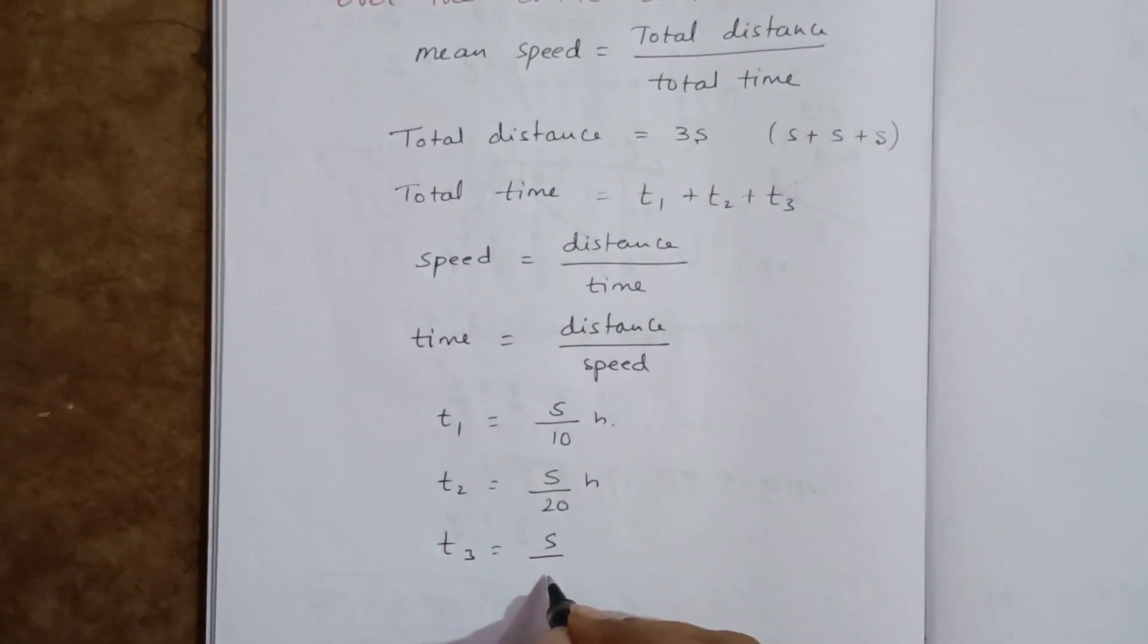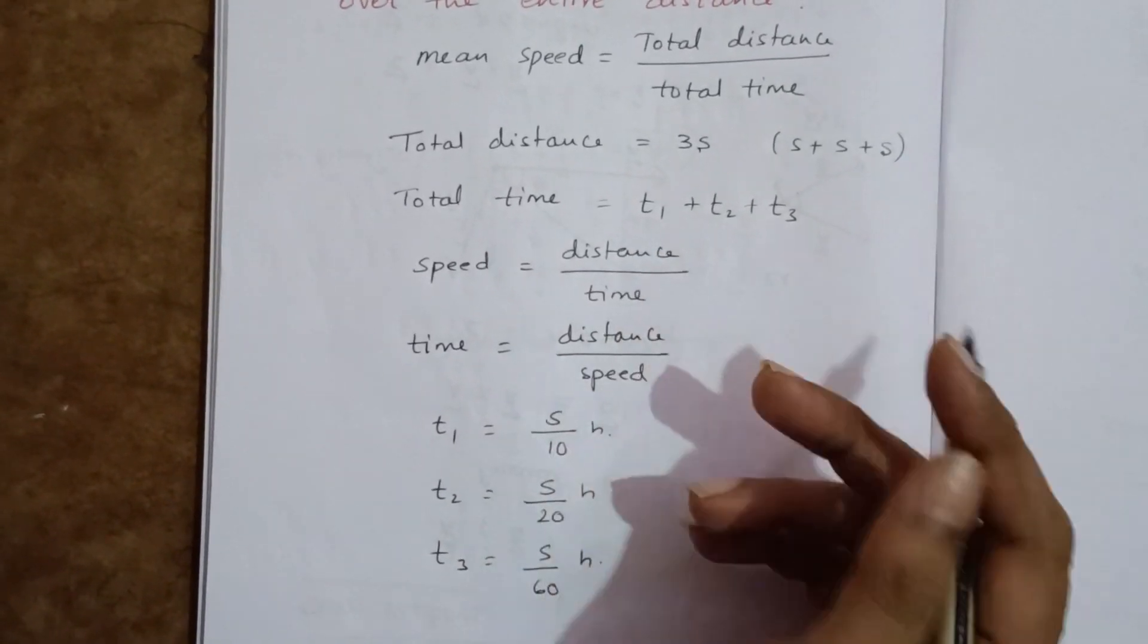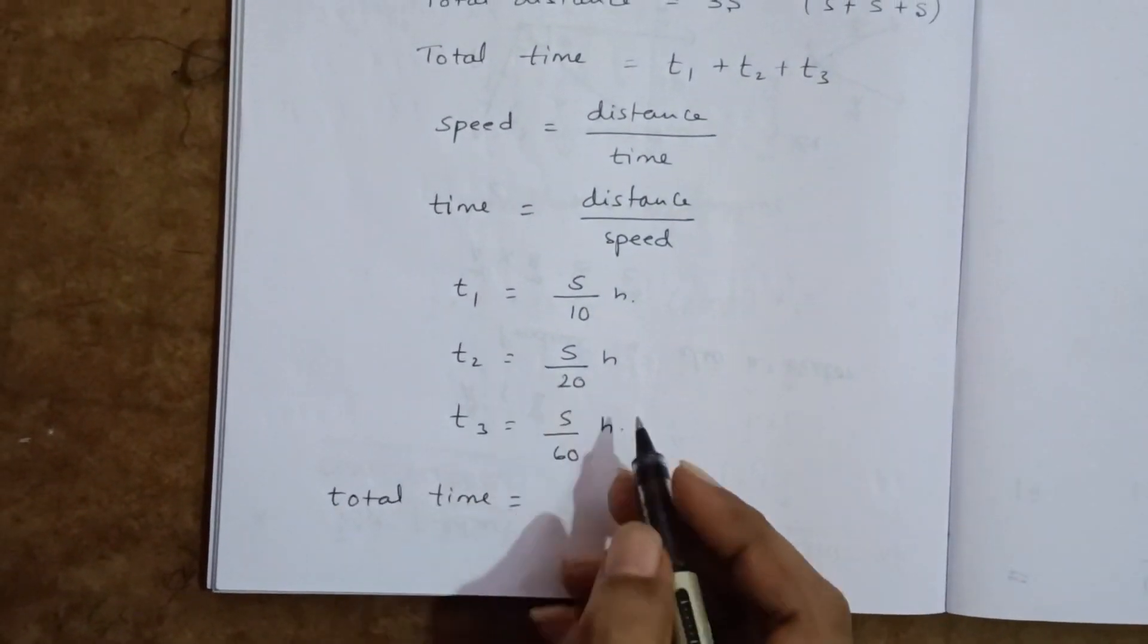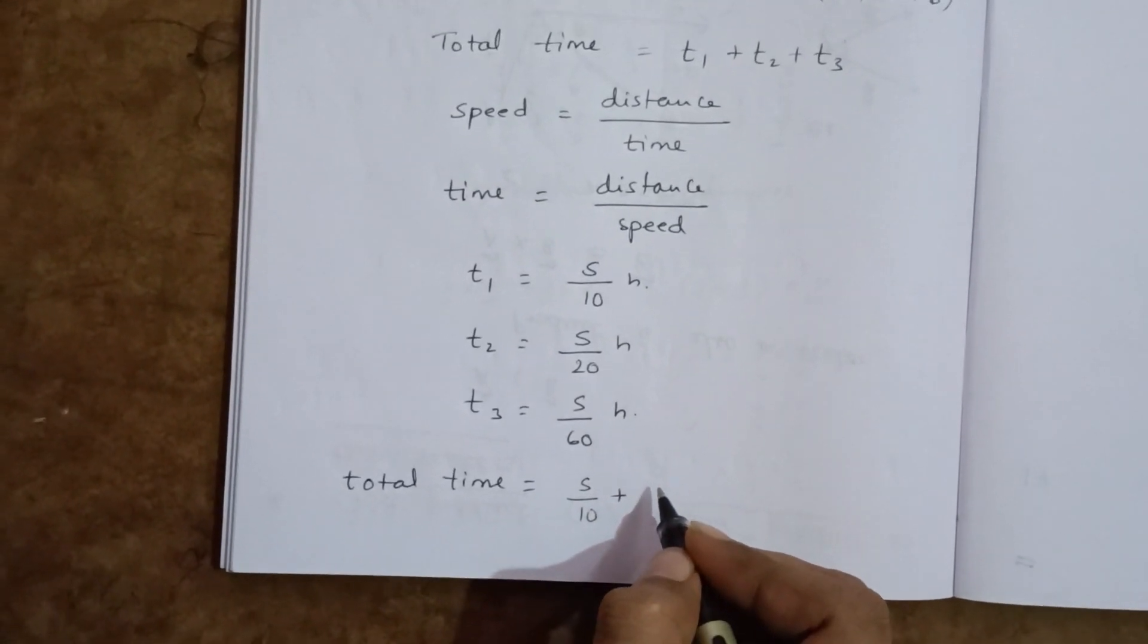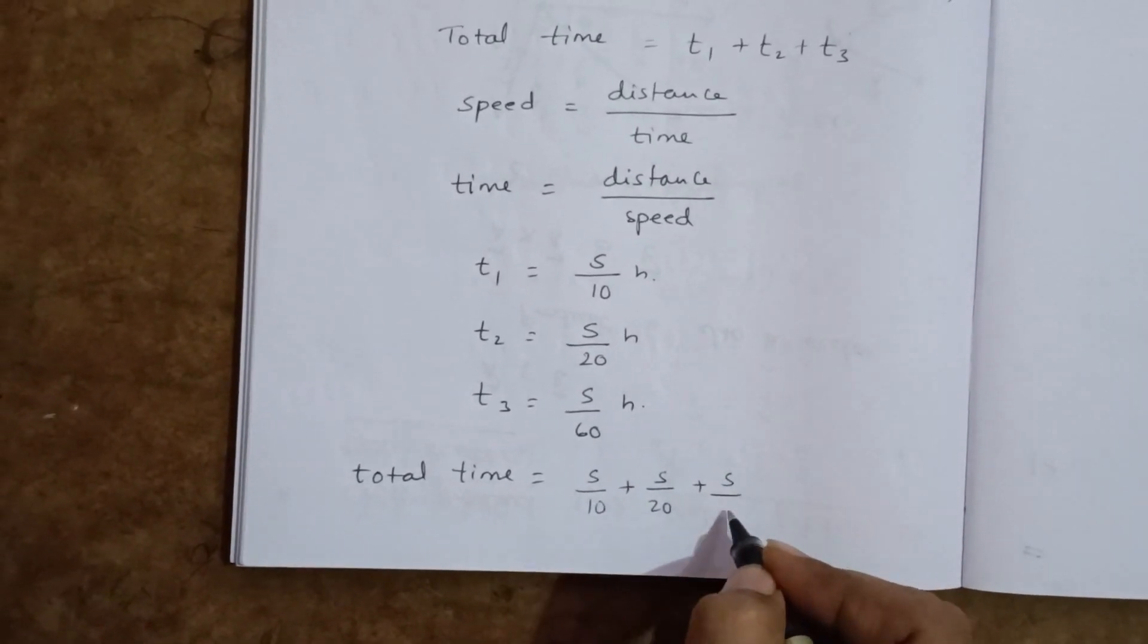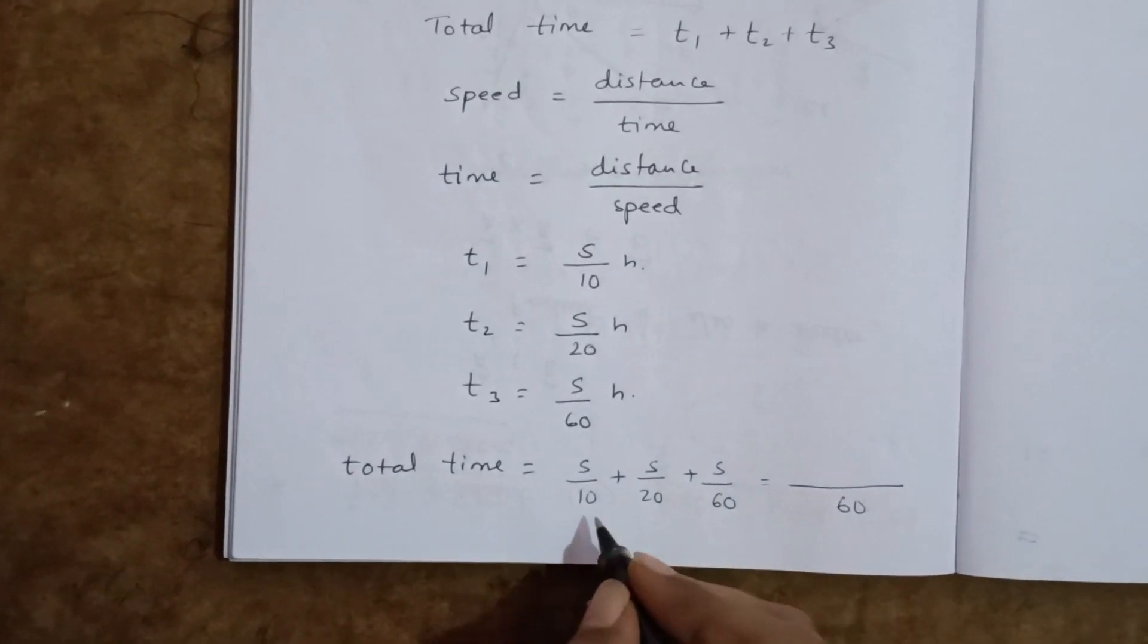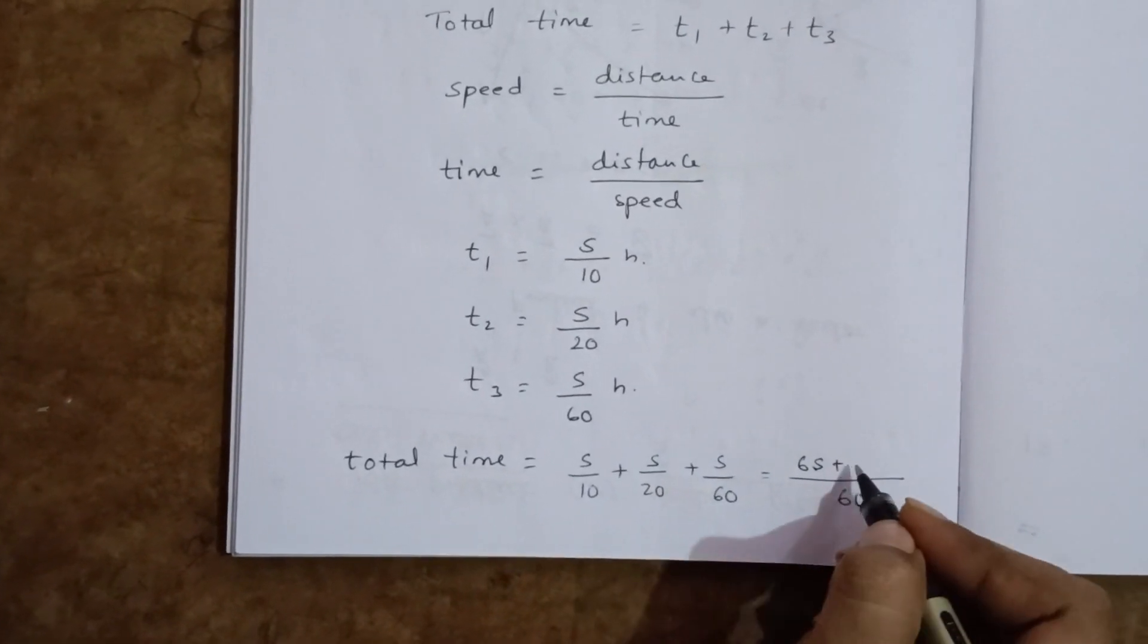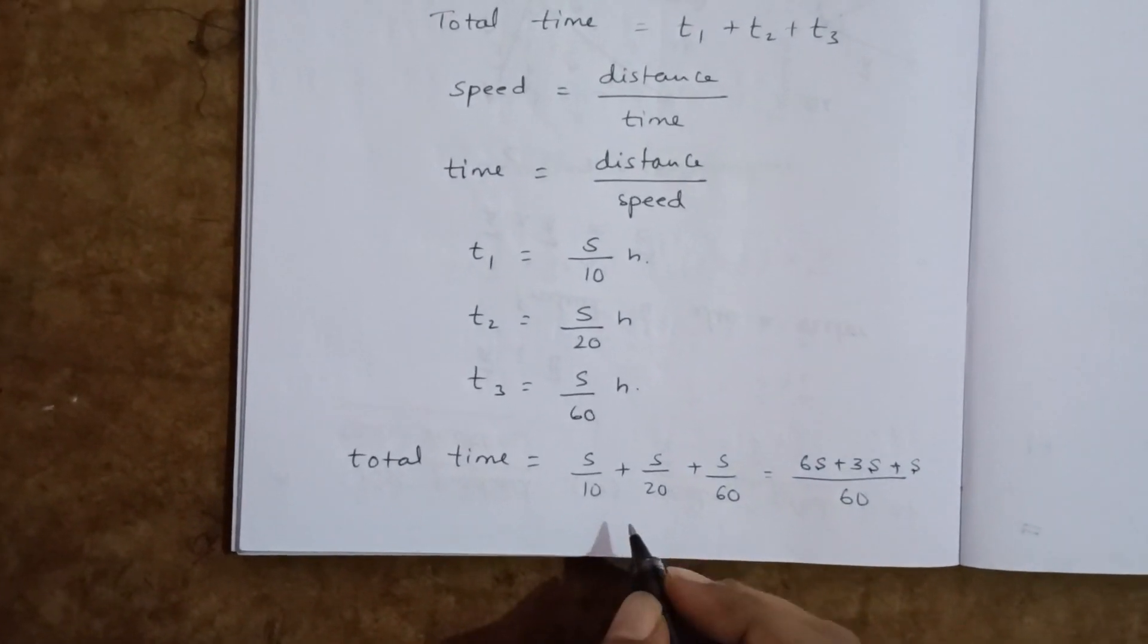Now we will find total time. Total time equals t1 plus t2 plus t3: s by 10 plus s by 20 plus s by 60. Taking LCM 60: 6 times 6s plus 3 times 3s plus 1 time s.